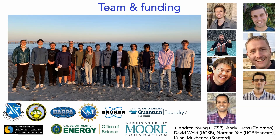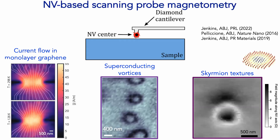I'm going to be talking about using NV centers as a way to sense and image condensed matter systems. As a teaser, this is an example of using a quantum sensor to really learn something about condensed matter systems. We've taken NV centers at the apex of a scanning probe tip and scanned it over a variety of interesting samples. We've looked at how electrons flow through graphene constrictions to understand the nature of the flow in terms of hydrodynamic or ballistic. We've also imaged superconducting vortices in a high-Tc superconductor, as well as the structure of nanoscale magnetic textures referred to as skyrmions.